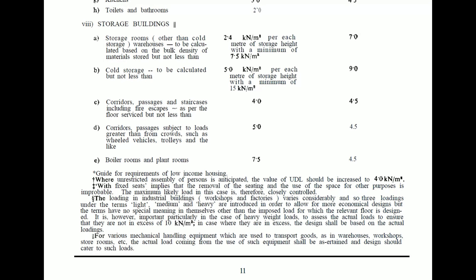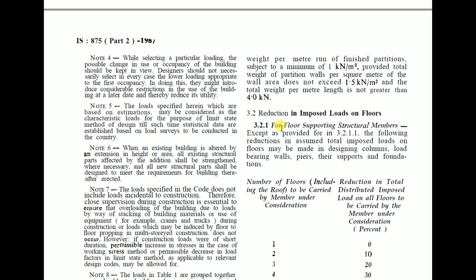Next, let's look at Clause 3.2 — reduction in imposed load on floors. For floor-supporting structural members, the following reductions in assumed total imposed load on floors may be made when designing columns, load-bearing walls, piers, and their supports and foundations.